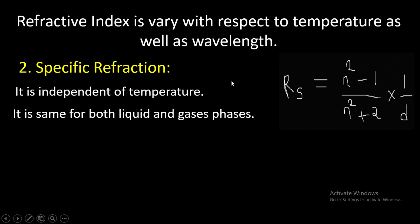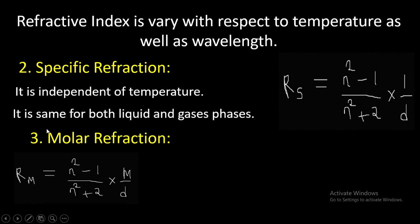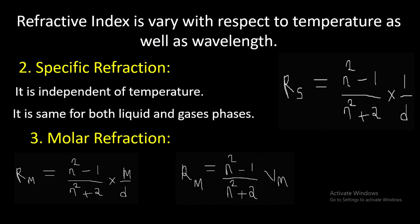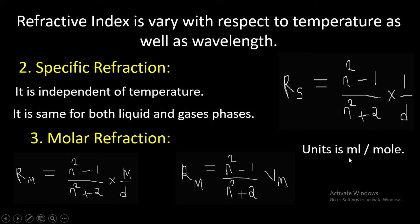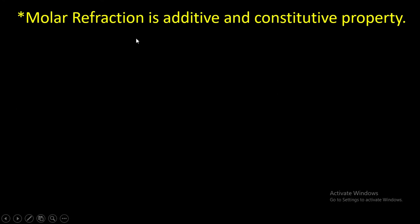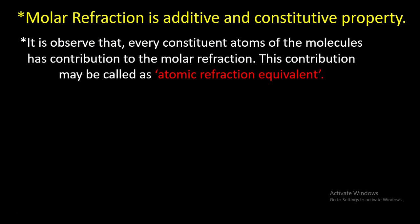The next concept is molar refractivity, denoted by rm, equal to (η² − 1)/(η² + 2) × (M/d), where M is molecular weight and d is density. M/d is the molar volume — the volume of one mole of compound — with units of mL/mol. Therefore the unit of molar refractivity is mL/mol. Molar refractivity is an additive and constitutive property, so each constituent atom contributes to the molar refractivity; these contributions are called atomic refraction equivalents.